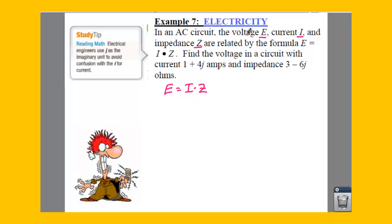We're trying to find our voltage. Our voltage is E. So if E is our voltage, then we need to plug in something for I. Well, I is our current, so our current would be 1 plus 4J. And your Z, which is your impedance, is going to be 3 minus 6J.